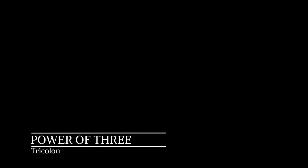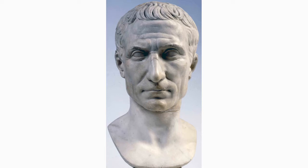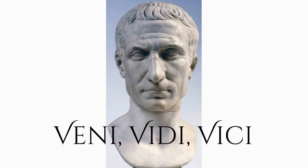The P stands for Power of Three, also known as tricolon. It's a form of rhetoric in which three words or phrases that are similar in structure, length, or rhythm are used in quick succession to make a single powerful impression. A common example is from Shakespeare's Julius Caesar — "Veni, vidi, vici" — which translates to "I came, I saw, I conquered." Listen to President Eisenhower use it in his speech "A Chance for Peace."